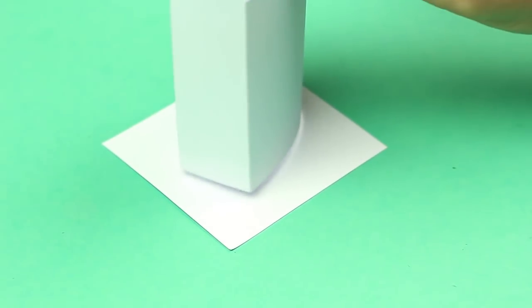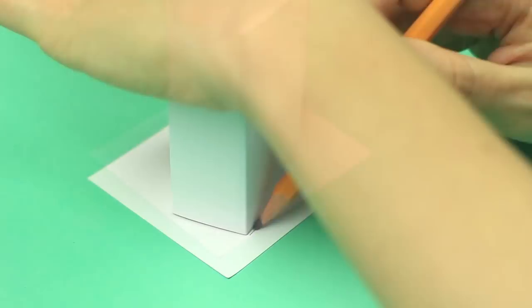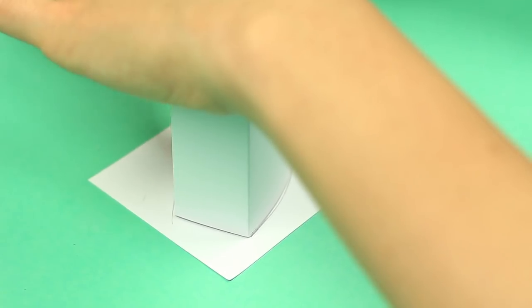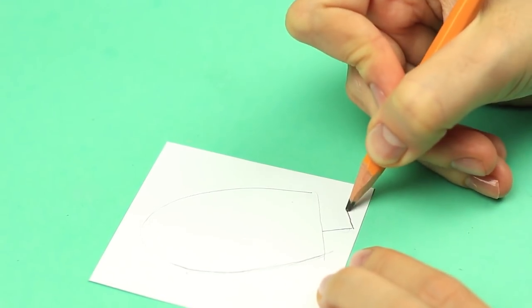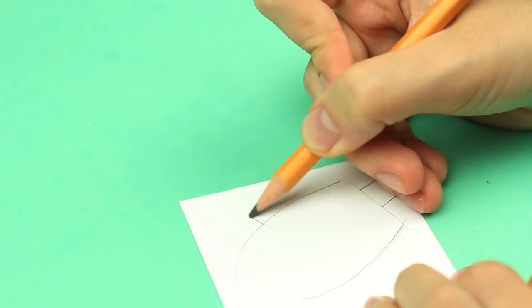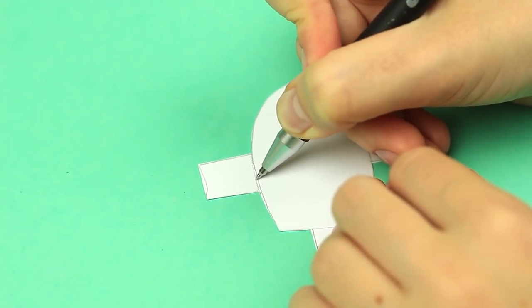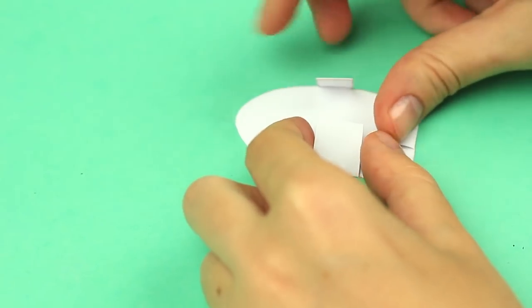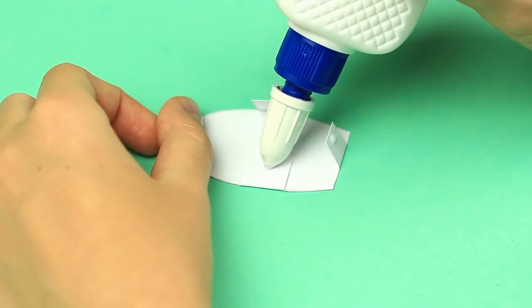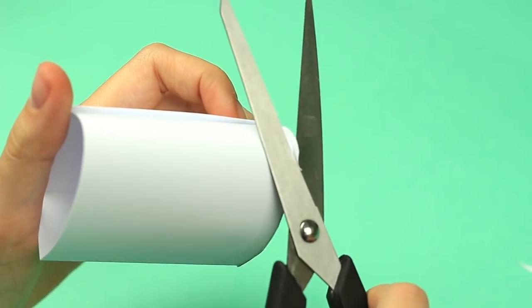Make the back side from another paper piece. Trace the back of the box. Add the flaps to attach the back to the sides. Score the lines. Add the glue. Attach the back. Trim the edge.